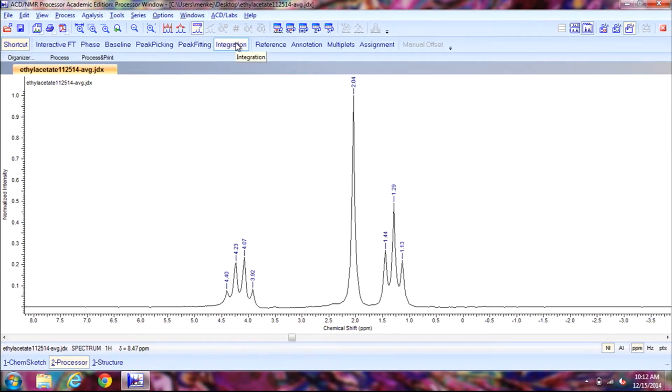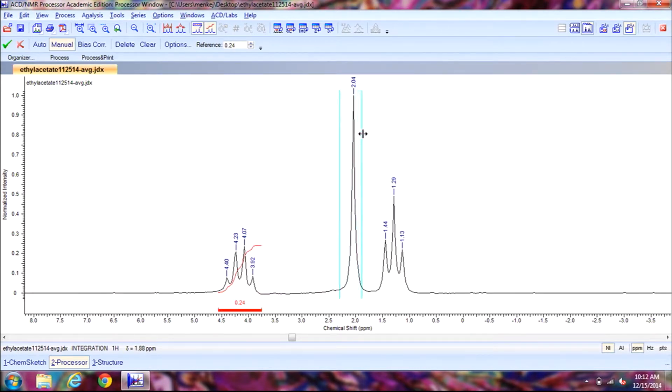Now we're going to click on integration. Again you might have an integration value provided to you by your instructor, but you're going to integrate by clicking and dragging for every single peak. Click to the left and drag all the way to the right, and do every single one for how many you have in your spectrum. Then to set the one that you know you can click on manual to exit out of that and then select the peak that you know the integration value for. So I know that this peak right here, the quartet, should have an integration value of 2. So I'll go up to reference and change this .24 to 2, and then that changes the value of the integrations for the other peaks for me as well. And now click on the green check mark.